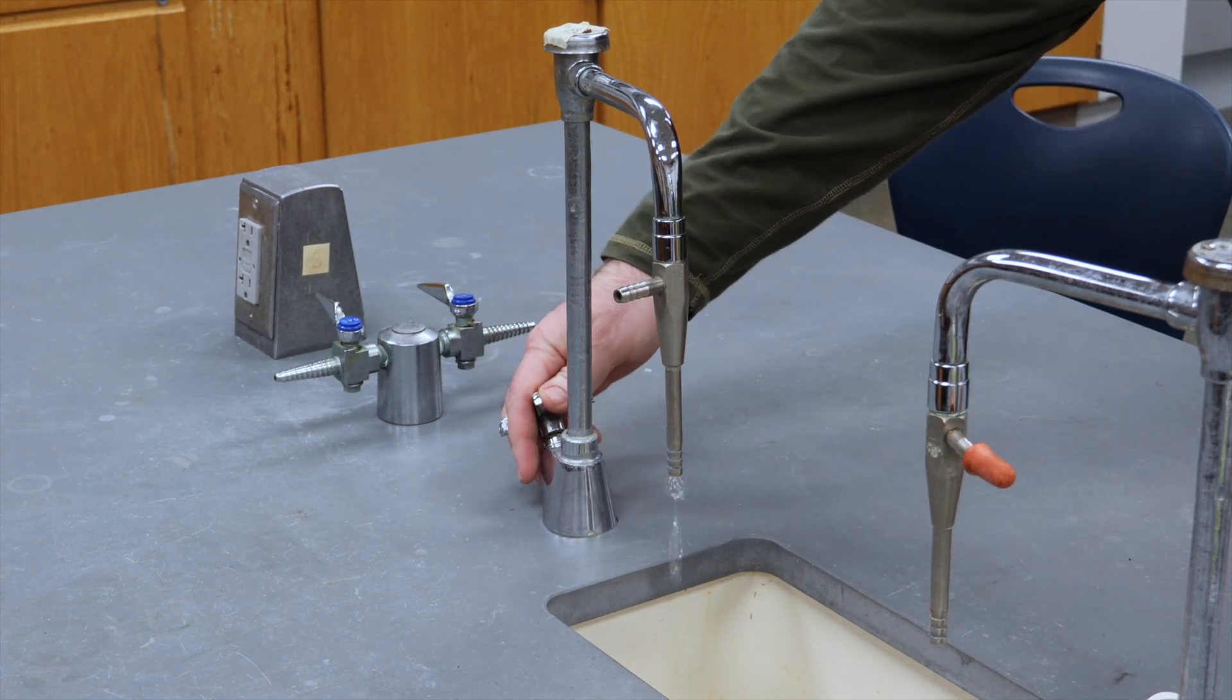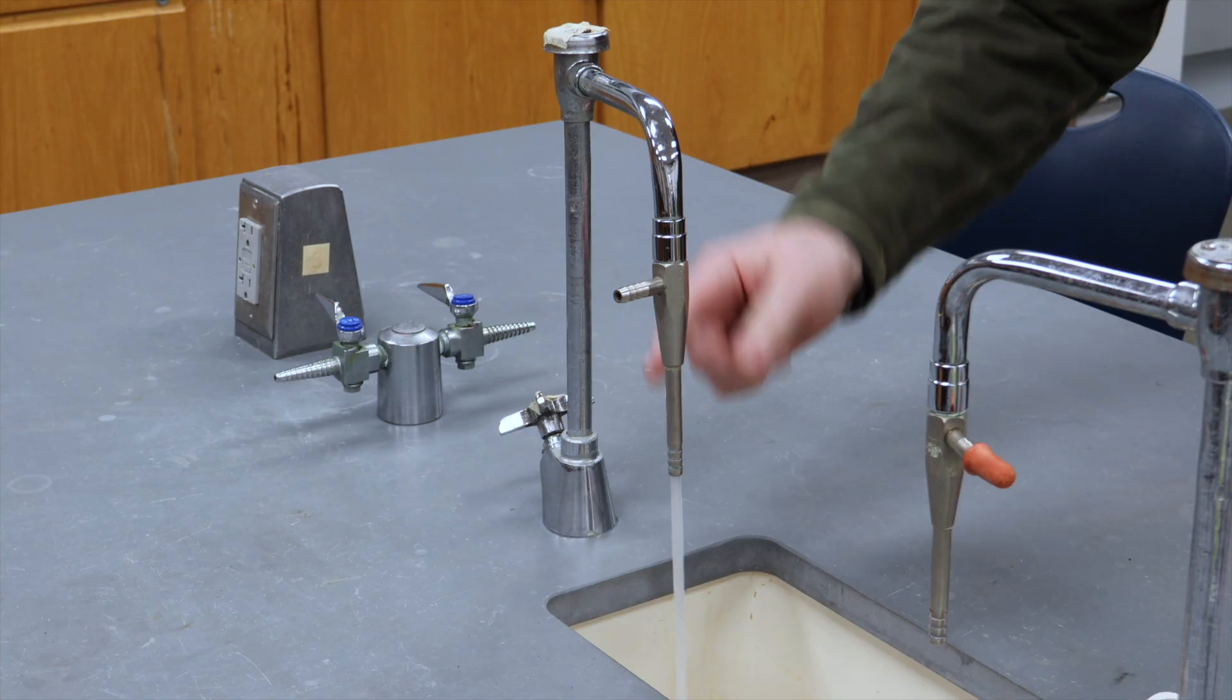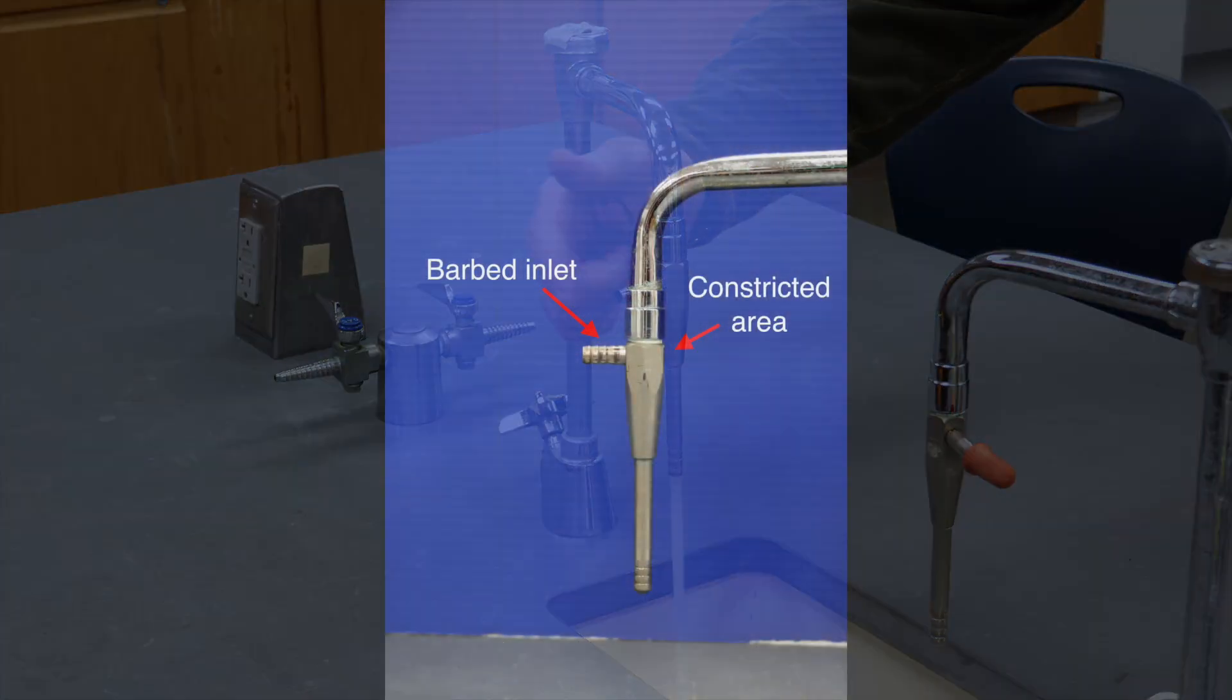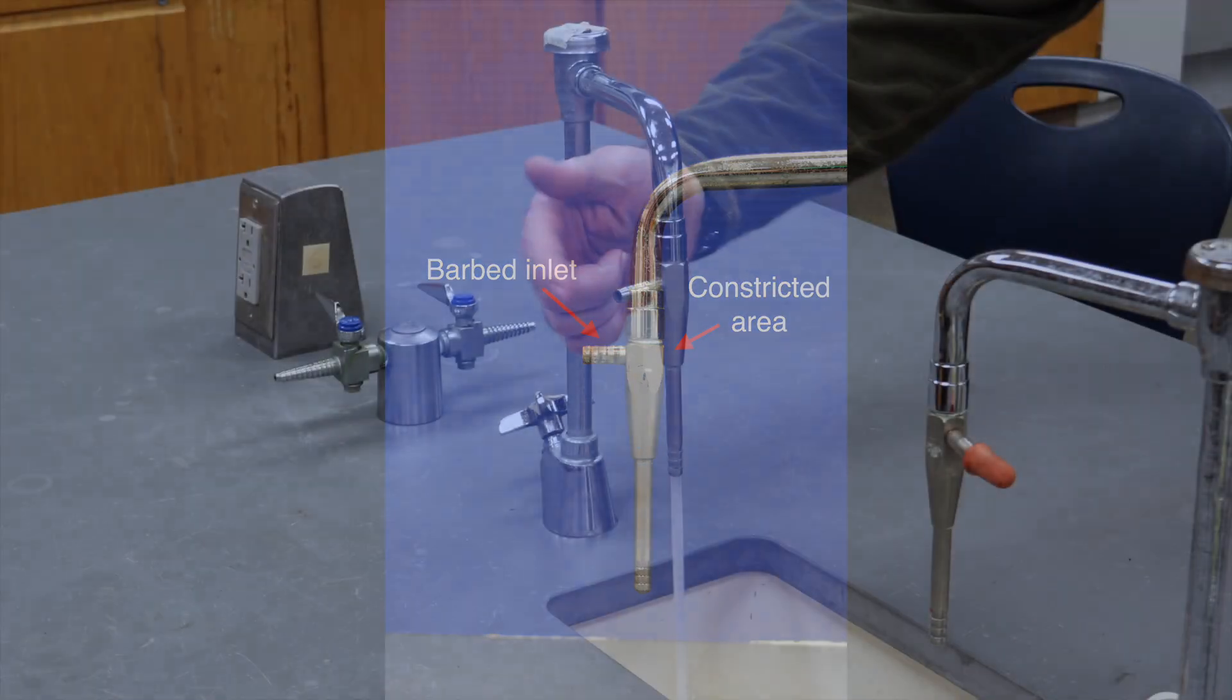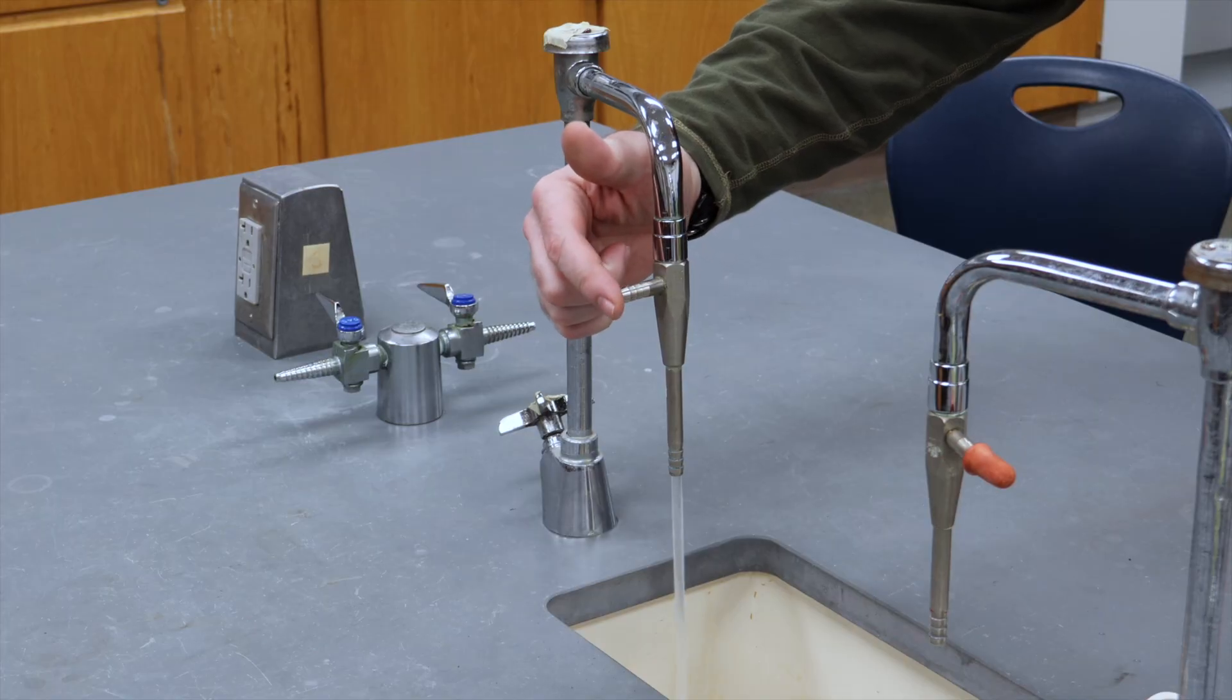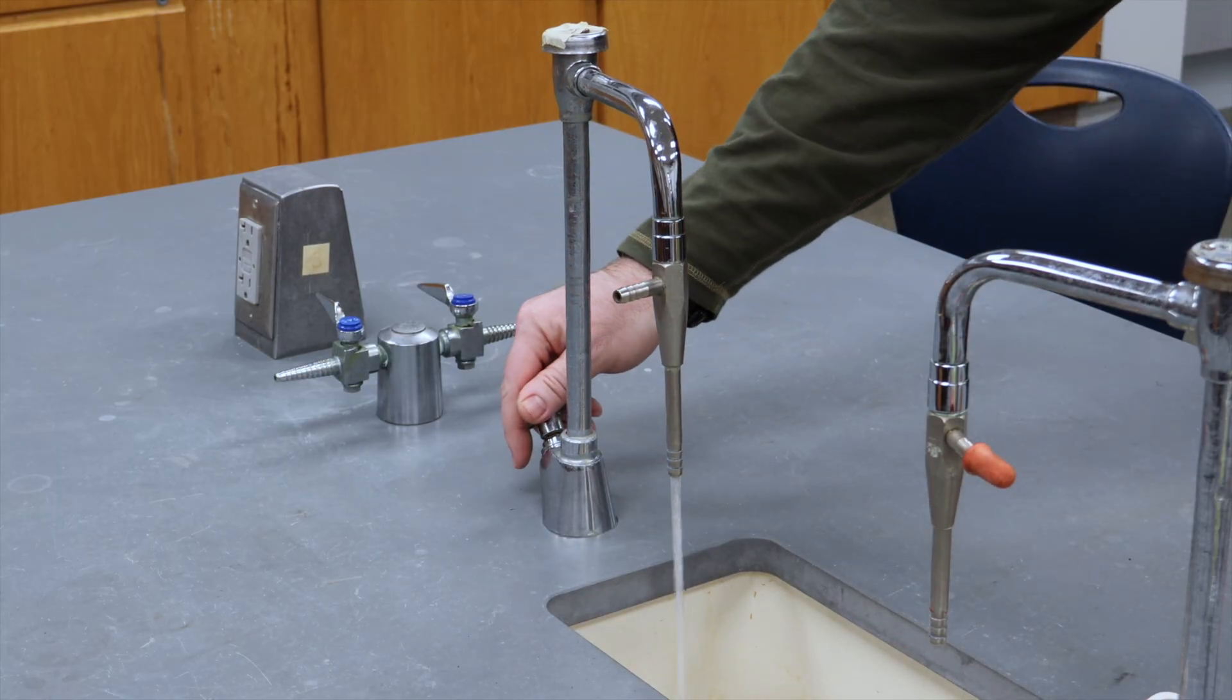Thanks to some interesting physics called the Venturi effect, as liquid flow increases through the constriction, it reduces the pressure inside that constricted tube. By carefully placing an opening perpendicular to that constricted tube, we get a vacuum. If you place your finger at the end of this inlet, you can usually feel the vacuum.